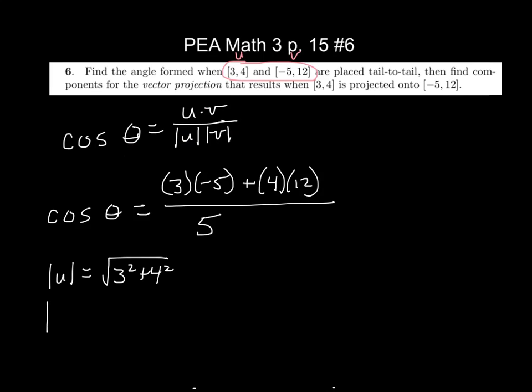So magnitude v would be what? 13. Because we would do negative 5 squared plus 12 squared. And you guys already know that those are Pythagorean triples and got those magnitudes.